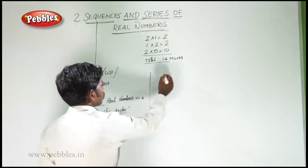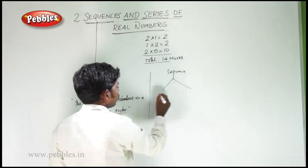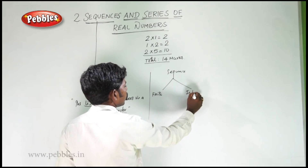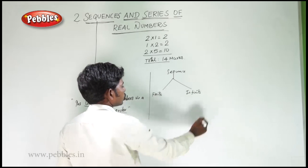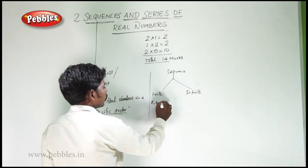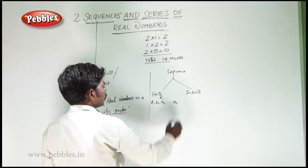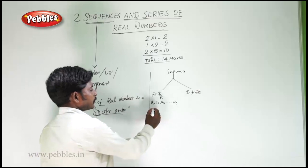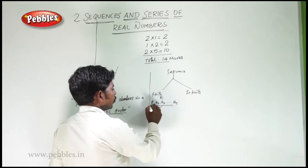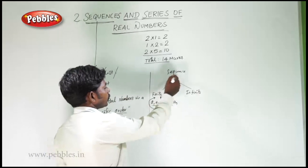The sequence is of two types: one is finite sequence, another one is infinite sequence. If a1, a2, a3, and so on up to an, then it is called a finite sequence.